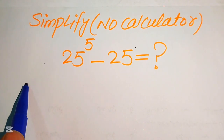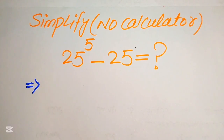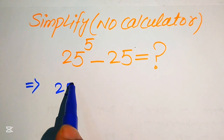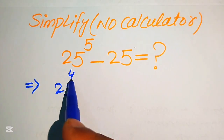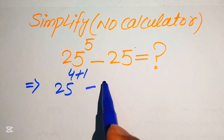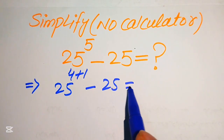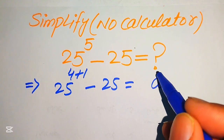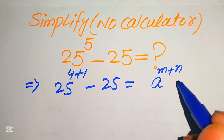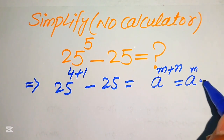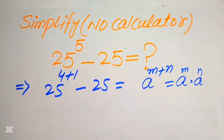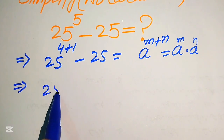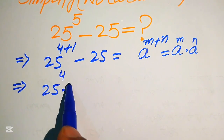First, we break the exponent of this term and write it as 25 to the power of 4 plus 1, minus 25. Now we apply the exponent law: if you have a to the power of m plus n, it equals a to the power of m multiplied by a to the power of n. According to this rule, we break these exponents.